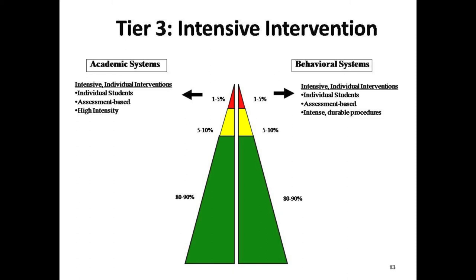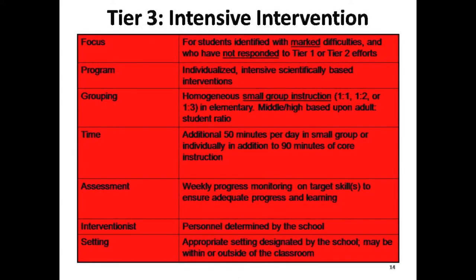Tier 3 includes intensifying interventions for struggling students. Students who have not responded adequately to Tier 1 and 2 receive specific, custom-designed, individual, or small group instruction beyond the instruction in Tier 1. This level of intervention is aimed at those students who have been identified as having significant academic or behavioral difficulties. Tier 3 addresses the needs of approximately 5-10% of students. Students in Tier 3 receive more intensive interventions, often individually or in small groups, on a more frequent basis than Tier 2 students. They continue to receive quality instruction aligned with the Texas Essential Knowledge and Skills and positive behavioral supports, as well as regular progress monitoring.